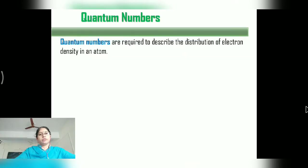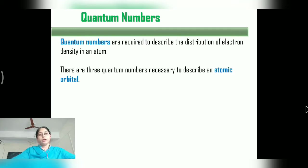First we will study Quantum Numbers. Quantum Numbers are required to describe the distribution of electron density in an atom. An atom is represented by Quantum Numbers. There are 3 Quantum Numbers necessary to describe the Atomic Orbitals.